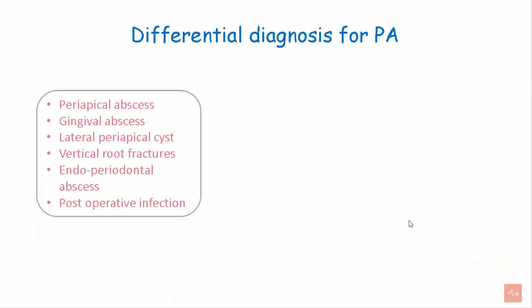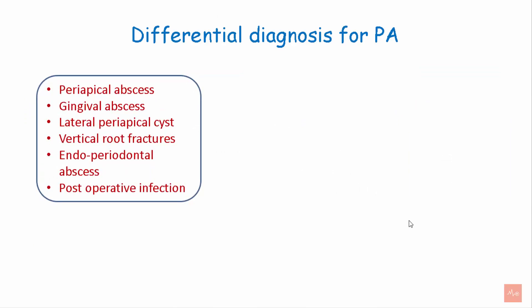To differentiate periodontal abscess from other groups of infections like the periapical abscess, gingival abscess, lateral periapical cyst, vertical root fractures, endo-perio problems, and post-operative infection, certain tests are performed.